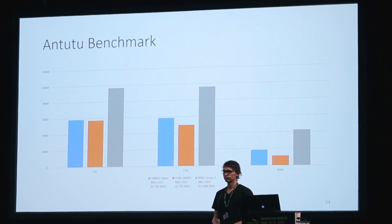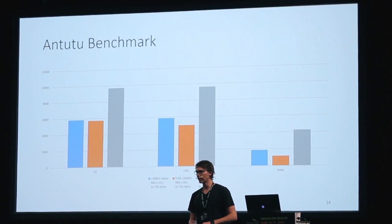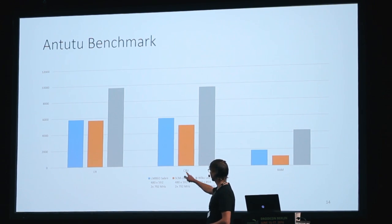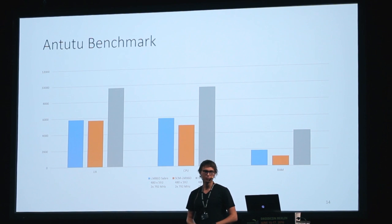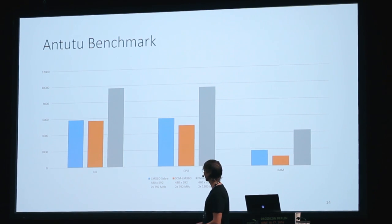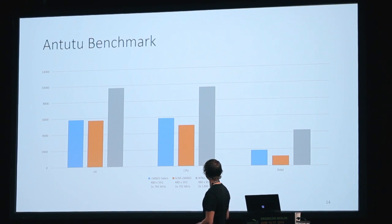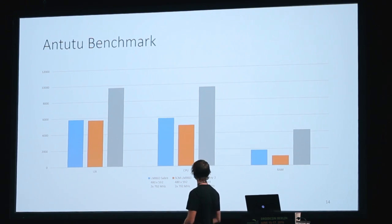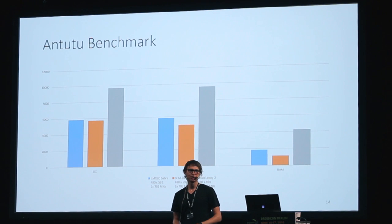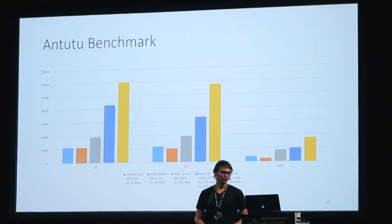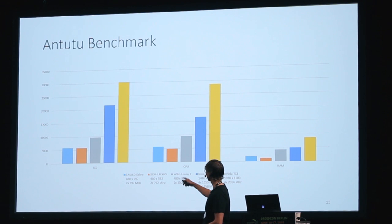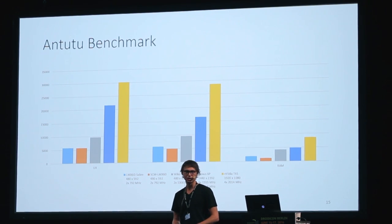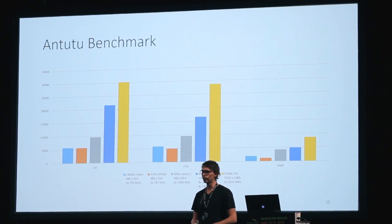Comparing the processor — just the yellow part is our board. If you compare it to the cheapest phone I found, the Wiko Lenny, which you can buy for $50, it outperforms our current chip by a factor of two in CPU. The RAM throughput is also about double. Comparing to the latest devices like the Nexus 6P or the NVIDIA TX1, they just outperform our chip by miles.